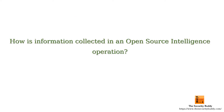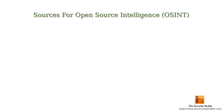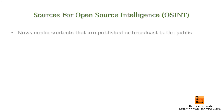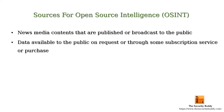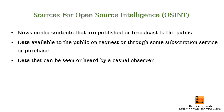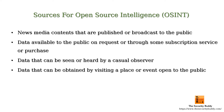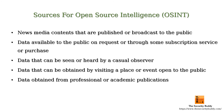How is information collected in an Open Source Intelligence operation? There can be several sources. For example, news media contents that are published or broadcast to the public can be a source. Data available to the public on request or through some subscription service or purchase also can be a source. Data that can be seen or heard by a casual observer, or obtained by visiting a place or event open to the public, can also be sources. Data obtained from professional or academic publications also can be a source.